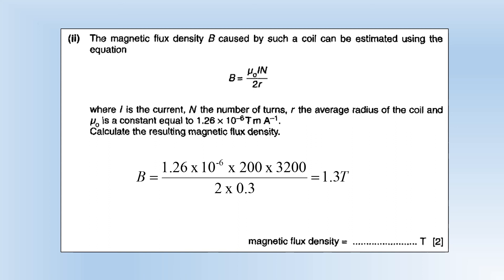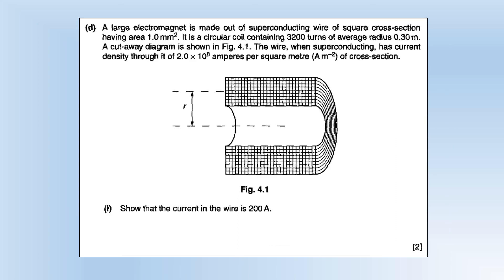A large electromagnet is made out of a superconductor. The wire has a square cross-section of 1 mm², formed into a circular coil with 3200 turns and an average radius of 0.3 metres, with a current density of 2 × 10⁸ amperes per square metre. To show the current in the wire is 200 amps, we multiply the current density by the area in metres squared — which requires multiplying by 10⁻⁶ — giving us 200 amps.